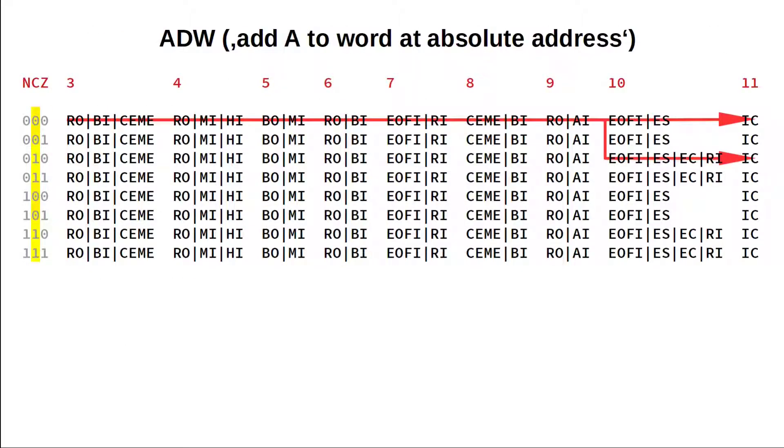And as a last flags example, let's take a look at the ADW instruction, adding A to the word at an absolute address in memory. The plan here is to first add A to the LSB of that word and then only increment its MSB if we had an overflow. So this instruction also needs to be able to react to the carry flag. As you can see, this happens in the last step of the microcode.